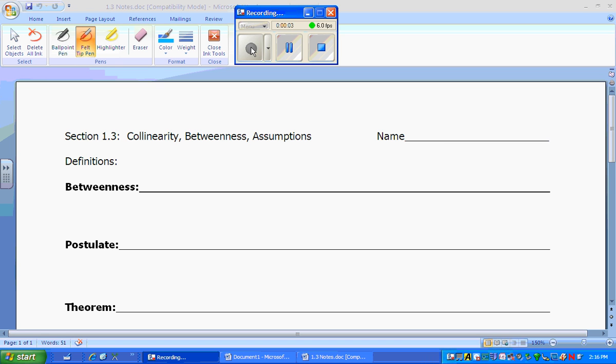Lesson 1.3 is called Collinearity, Betweenness, and Making Assumptions. We're going to talk about three definitions to begin with: betweenness, postulate, and a theorem.